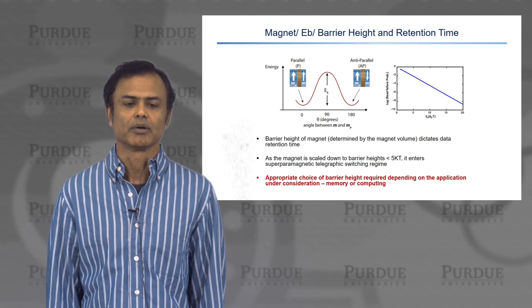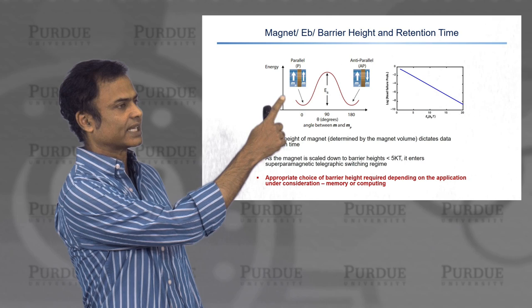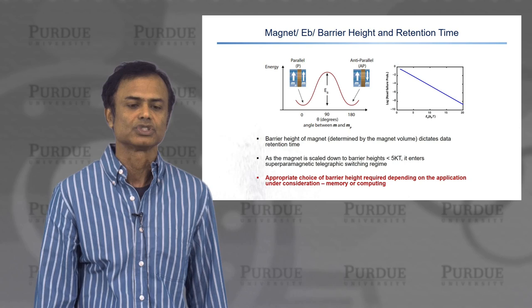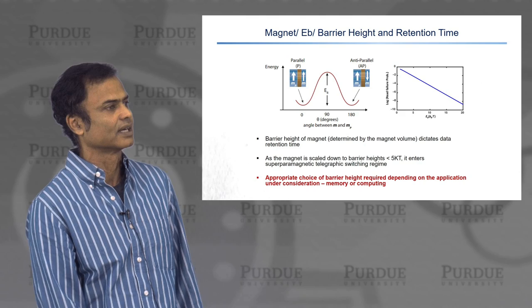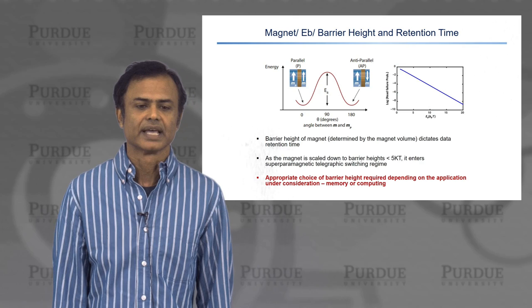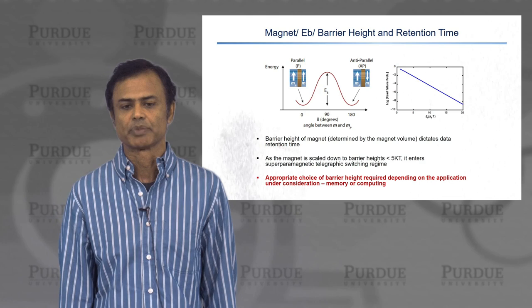Magnetic tunnel junctions consist of two nanomagnets separated by a spacer. What I'm showing here is that one nanomagnet is fixed and the other is called a free one, meaning you might actually be able to change the configuration of that magnet. These two nanomagnets can be in either a parallel configuration or an anti-parallel configuration. Measuring the resistance between the two devices shows that the parallel configuration has a lower resistance than the anti-parallel configuration.